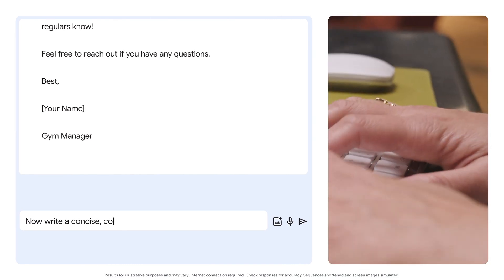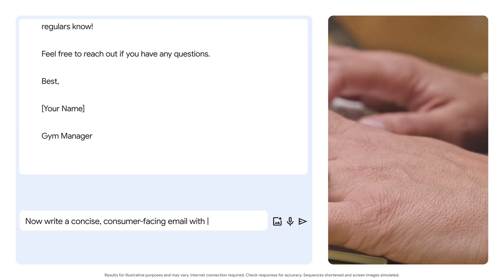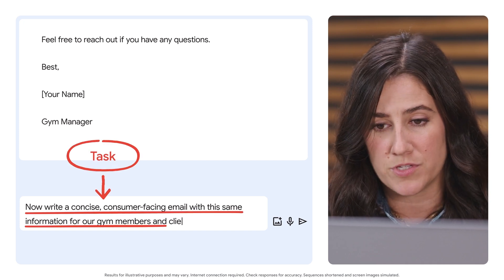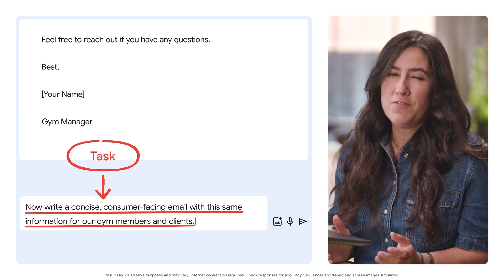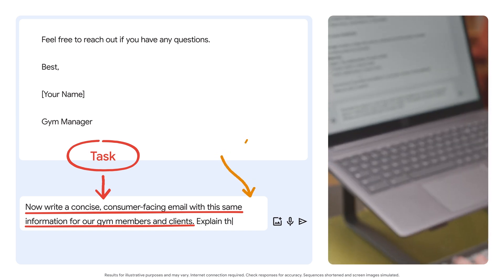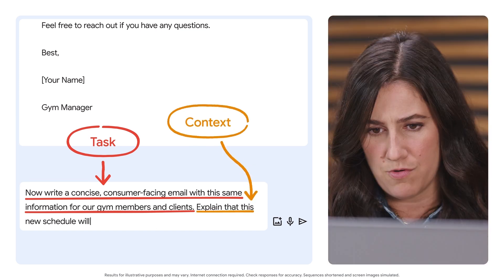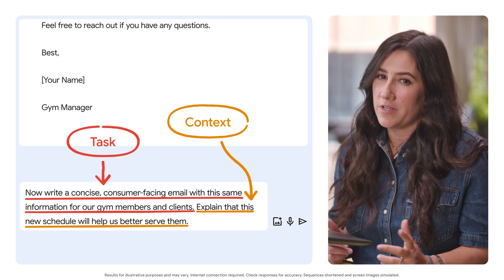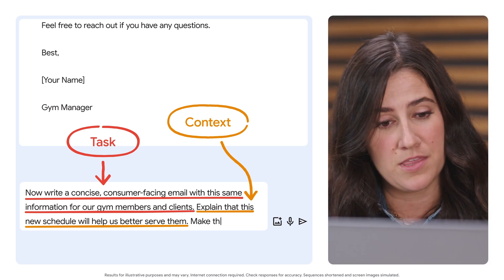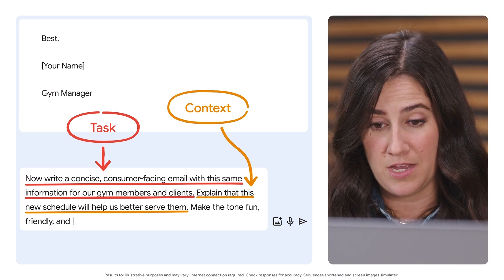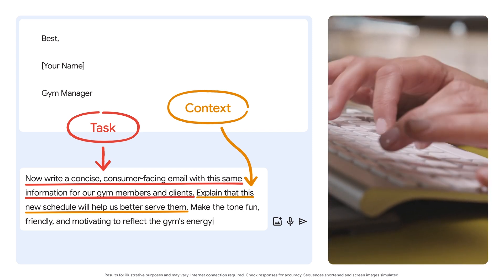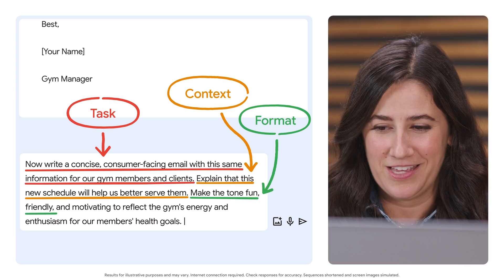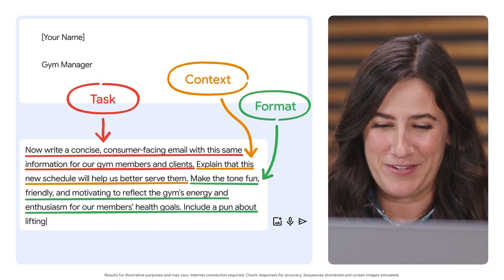Now, write a concise, consumer-facing email with the same information for our gym members and clients. Let's get even more specific: explain that this new schedule will help us better serve them. Make the tone fun, friendly, and motivating to reflect the gym's energy and enthusiasm for our members' health goals. Include a pun about lifting weights.